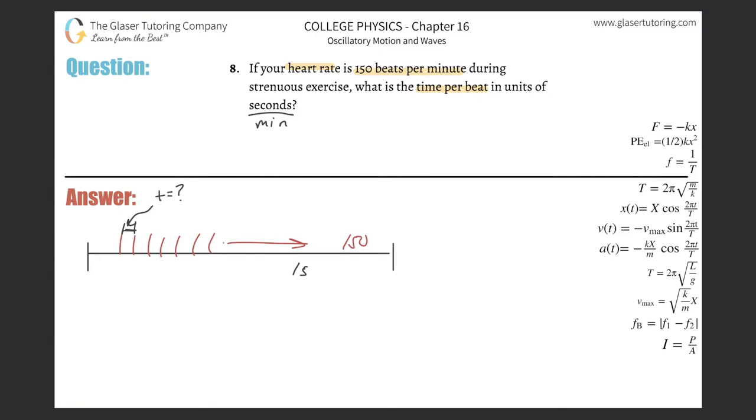You just got to simply take the reciprocal. So essentially one second divided by 150 beats, that would be simply one divided by 150, and that's about 0.00667 seconds per beat.